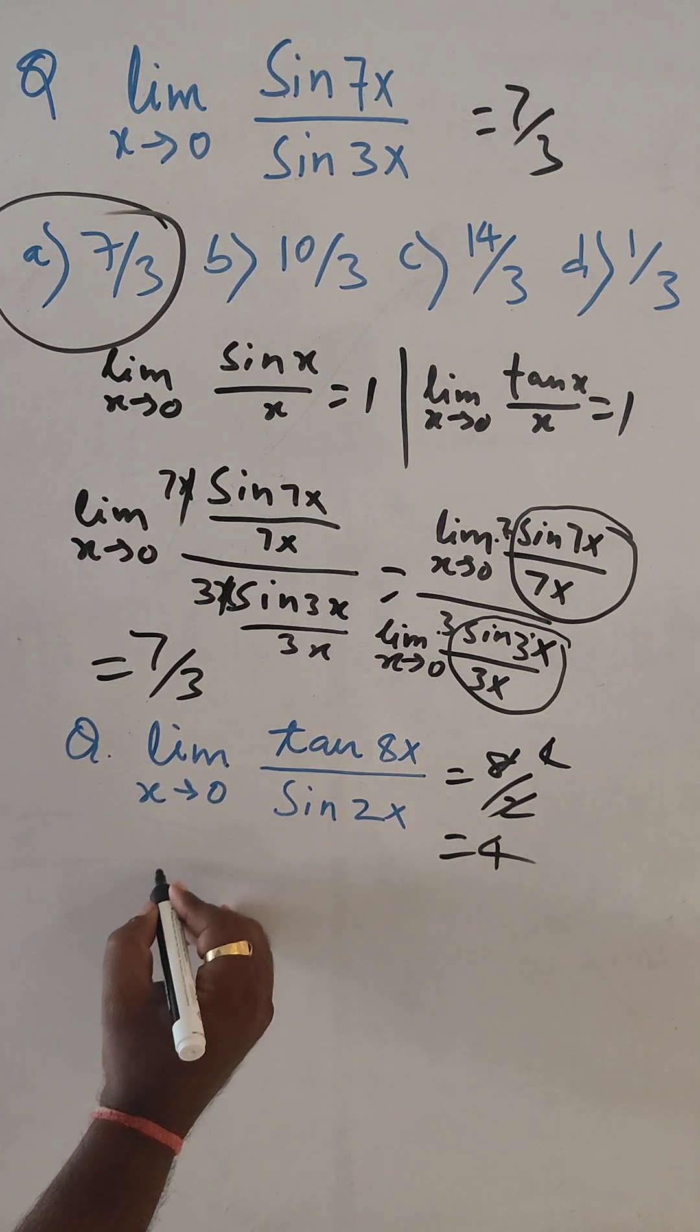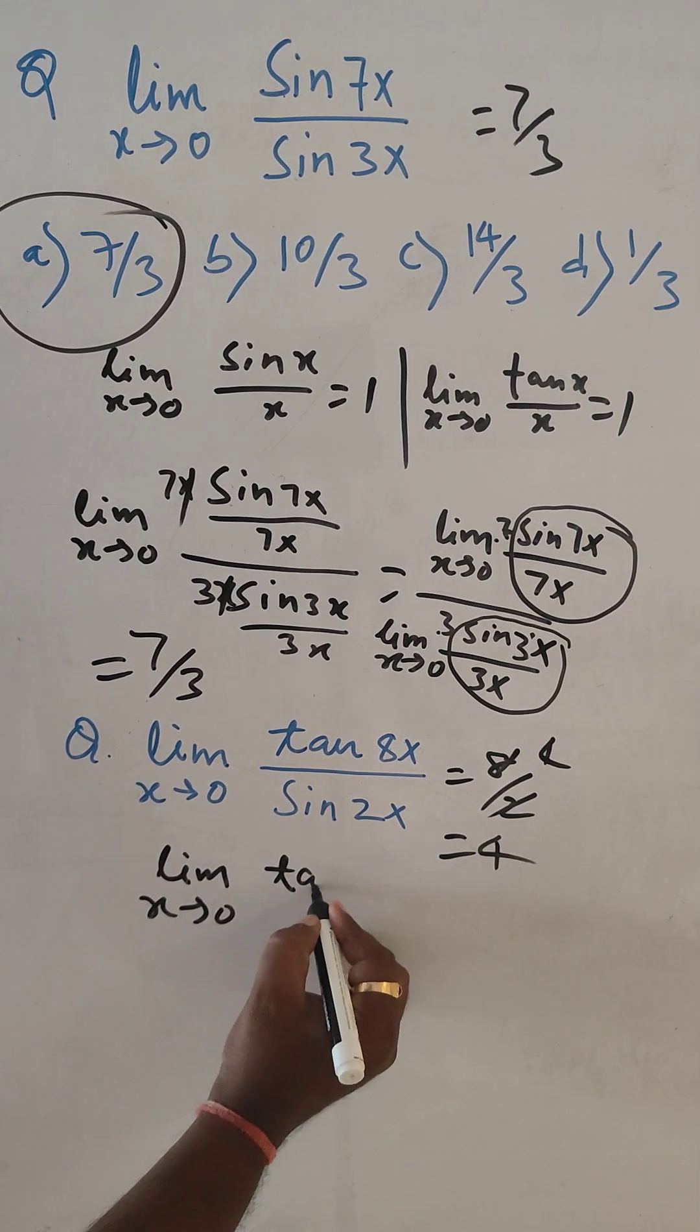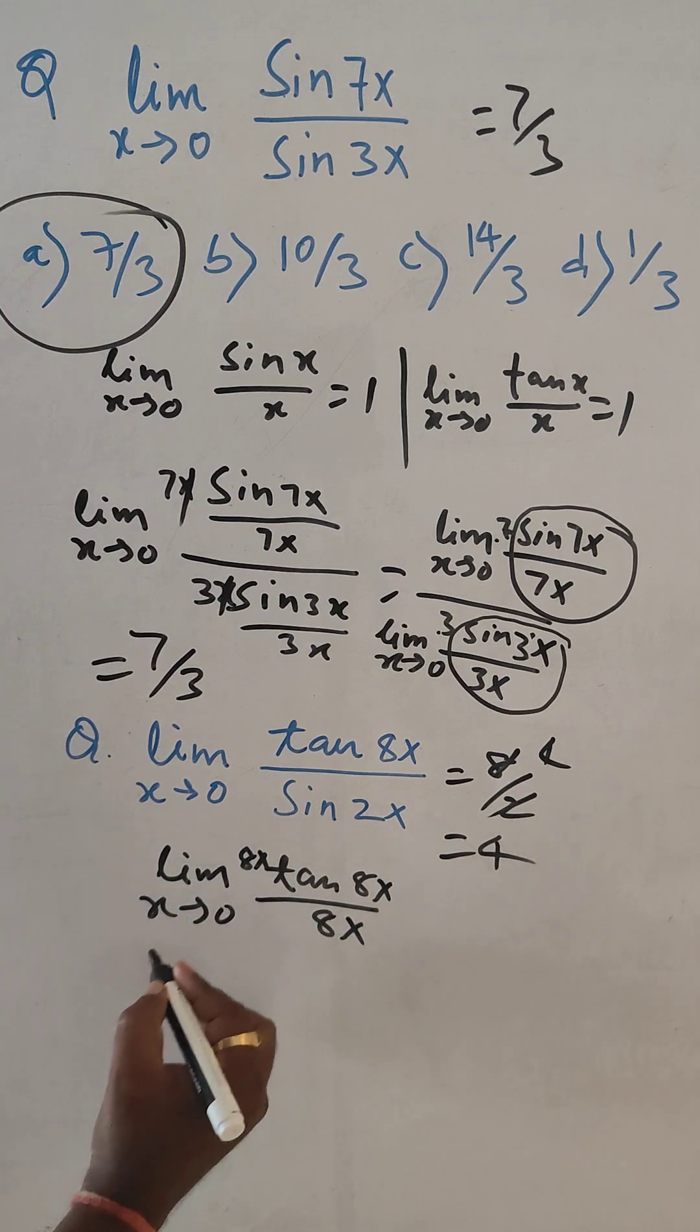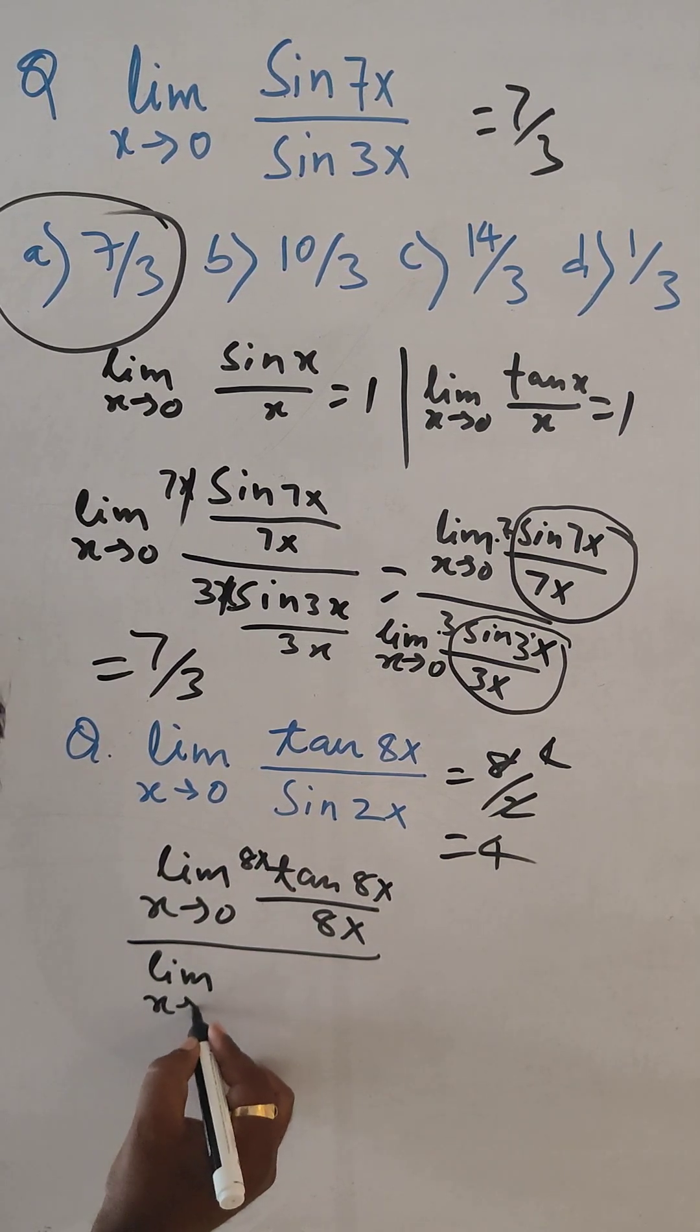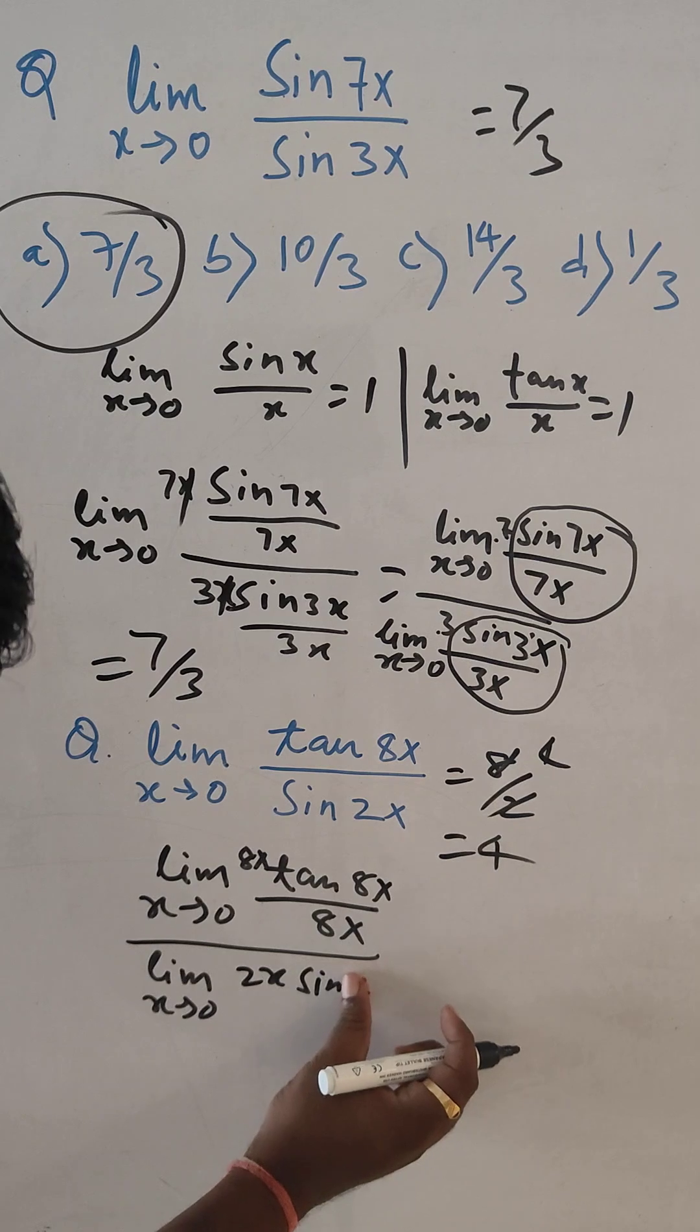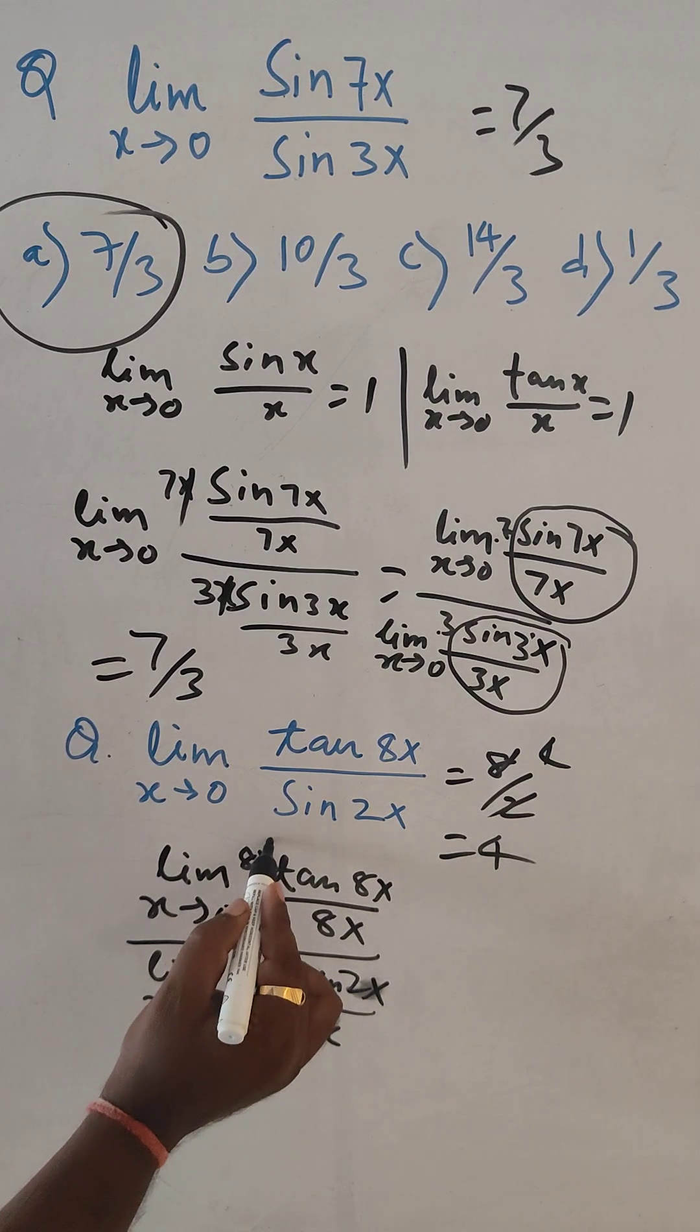But how it can be. Let's see. Limit x tends to 0, here tan 8x divided by 8x, here also 8x. And limit x tends to 0, here 2x, sin 2x, 2x, and here 2x. This x, x cancel.